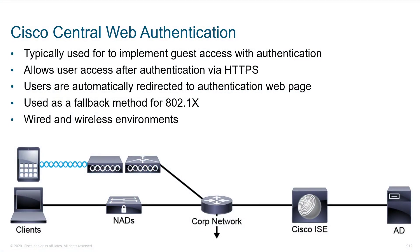Let's take a look at central web authentication. This is a really nice fallback that allows us to implement guest access for authentication. This is great in a scenario where the user doesn't support 802.1x and they're also not a device we've seen before — so it wouldn't be appropriate to do MAC authentication bypass. Alternatively, you may prefer this to MAC authentication bypass because we're still using a username and password, which is a bit more secure.